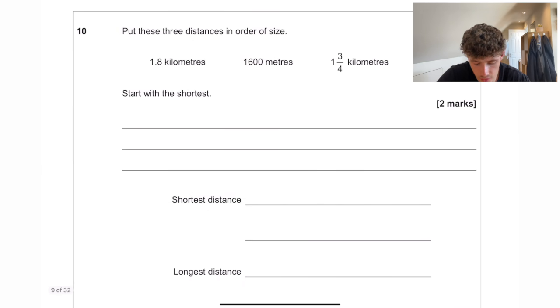Put these distances in order of size. 1.8 kilometres is 1,800 metres. That stays the same. 1 and 3 quarters is going to be 1,750 metres. So the shortest is 1,600. The key part with these is make sure you write them in their original form. And that one will be 1.8 kilometres.